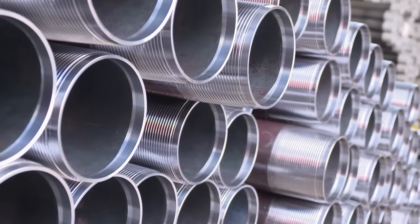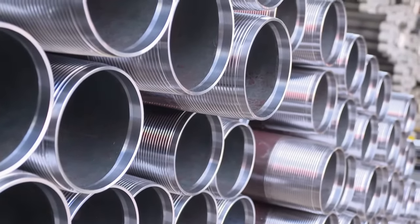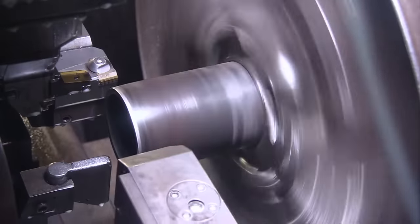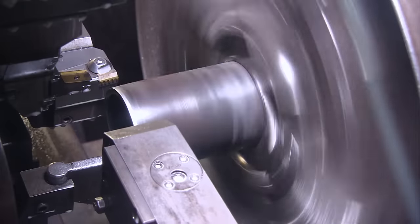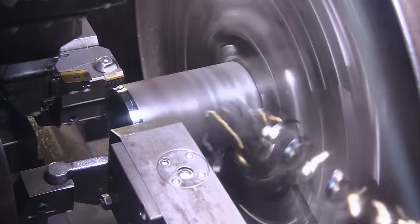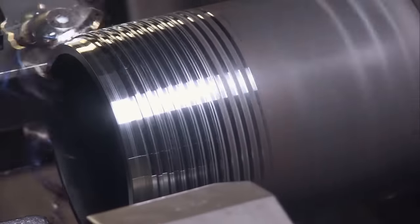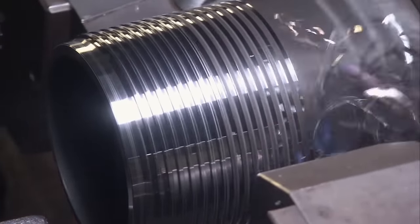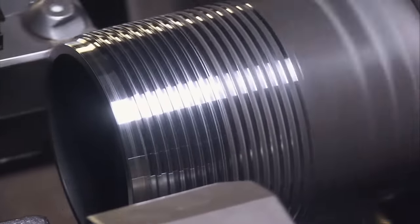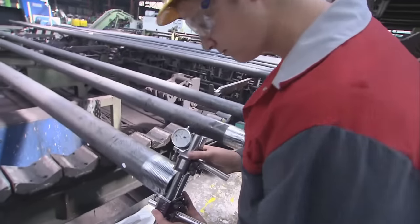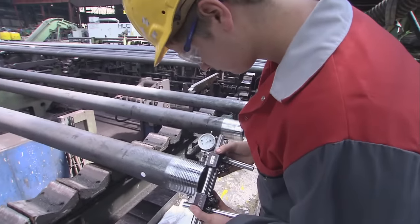Two threading lines, each with four CNC threading machines, are available for finishing OCTG and other tubular products destined for the oil and gas industry. These machines cut connections at the ends of the tubes, ranging from simple API threads to sophisticated gas-tight premium connections.